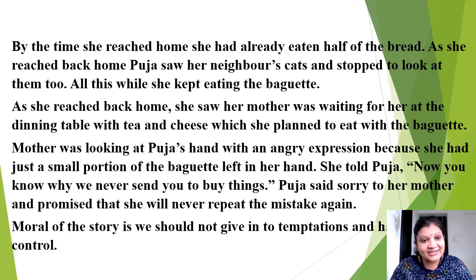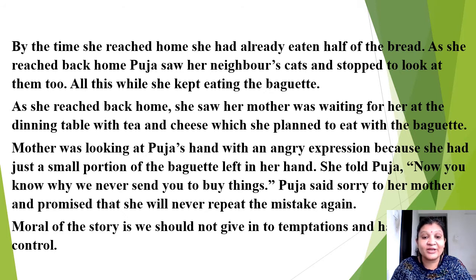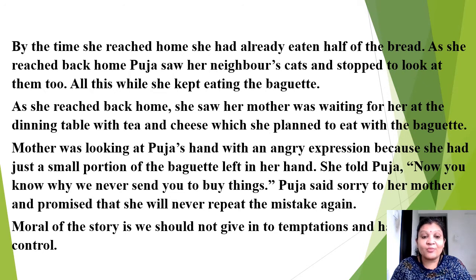As she reached home, Puja saw her neighbor's cat and stopped to look at them too, all the while continuing to eat the baguette. When she finally got back home, she saw her mother waiting at the dining table with tea and cheese, which she had planned to eat with the baguette. Her mother looked at Puja's hands with an angry expression — only a small portion of the baguette was left. She told Puja, 'Now you know why we never send you to buy things.' Puja said sorry and promised she would never repeat the mistake.